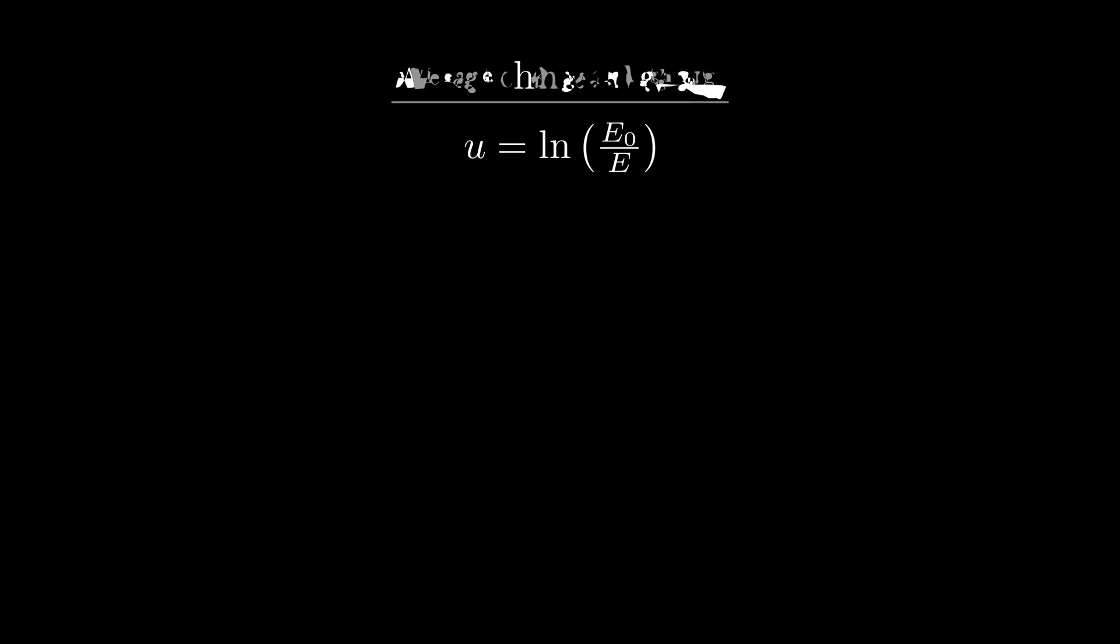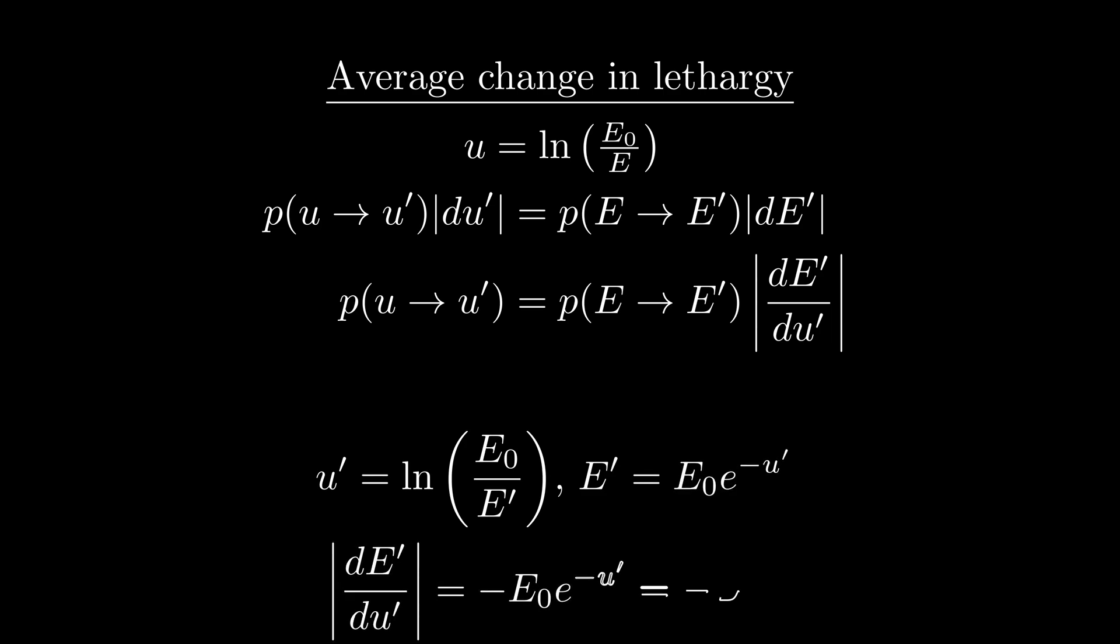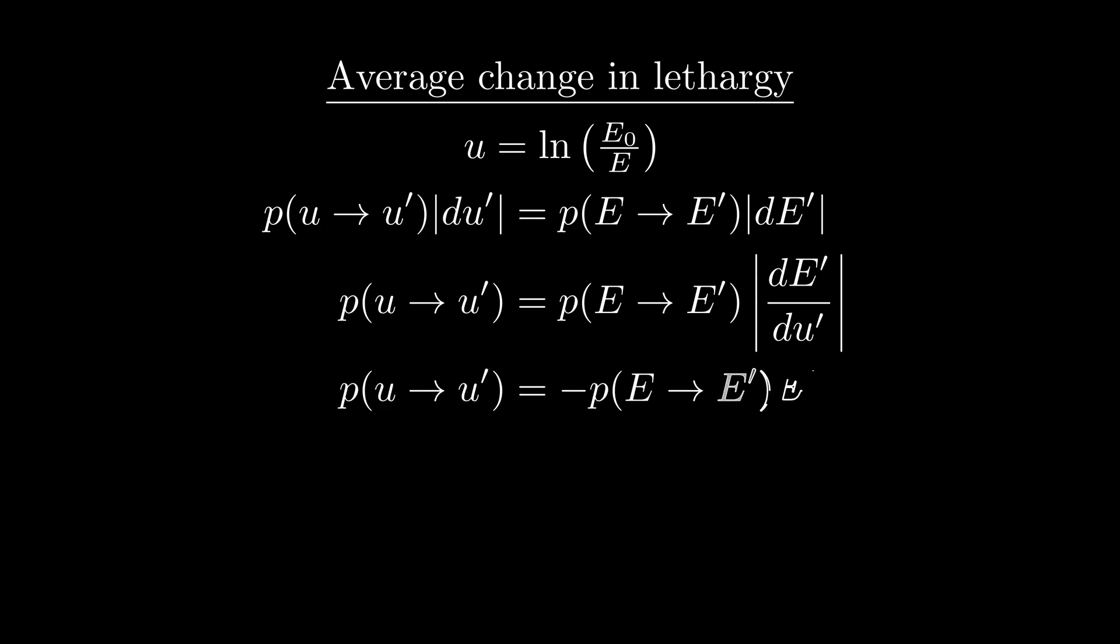Now just like we did before for energy, let's calculate the average change in lethargy for a scattering event. We start by constructing our probability density function for lethargy as follows. Every differential slice of our lethargy function should match that of the energy function, so we write the following equality. And then we can calculate dE prime over dU prime trivially since we already have defined the function which relates energy and lethargy. And then we just plug in our energy probability density function from earlier and we get our result.